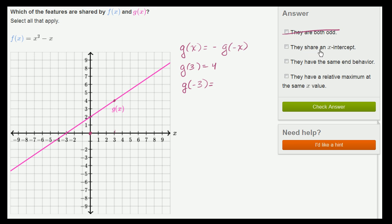They share an x-intercept. So g(x) only has one x-intercept. It intersects the x-axis right over here at x equals -3. Now let's think about the x-intercepts of f(x). To do that, we just need to factor this expression.